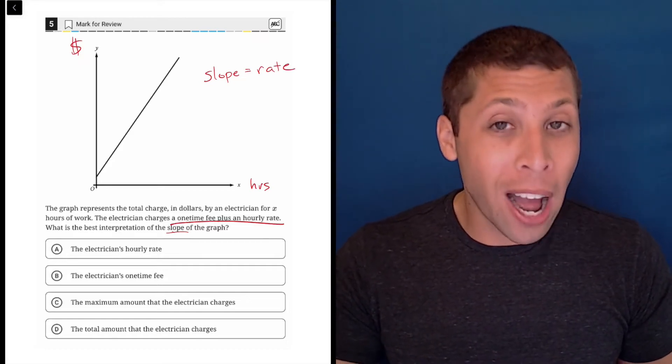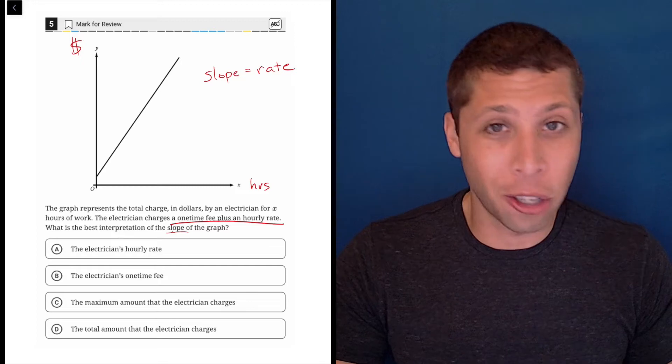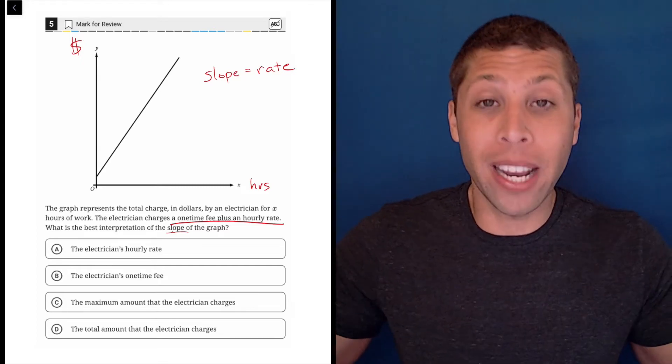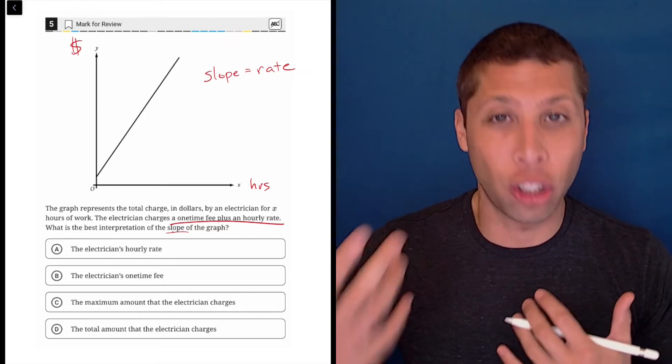We call it rise over run or change in Y over change in X when we're just talking about a normal line without any story involved, but that's what a rate is, right? It's two comparisons of values. It's representing a change.